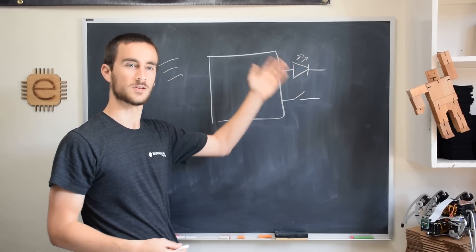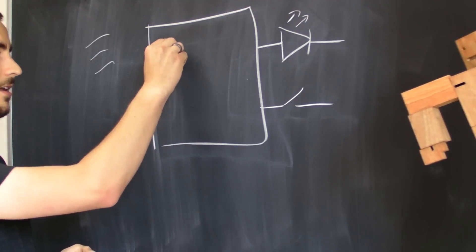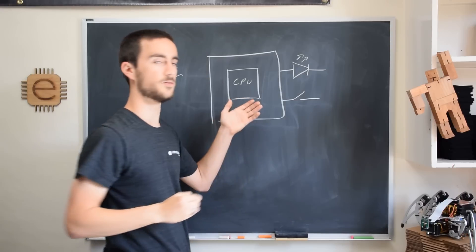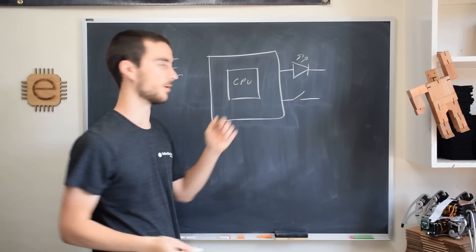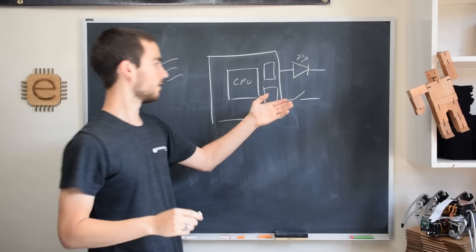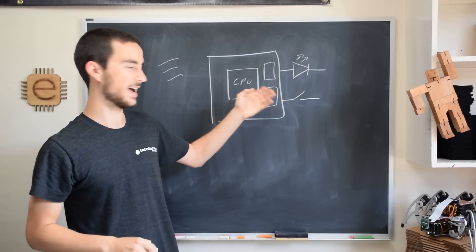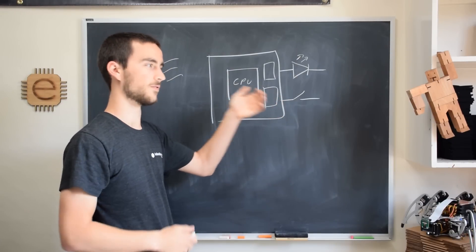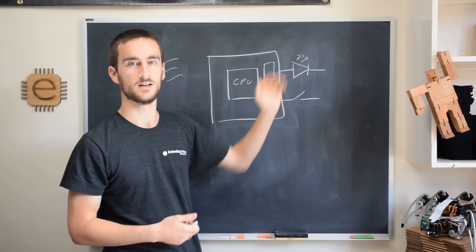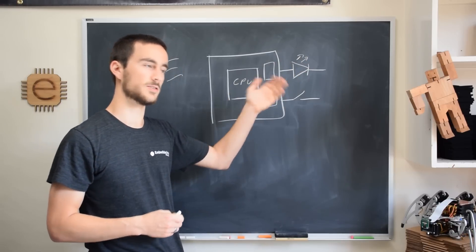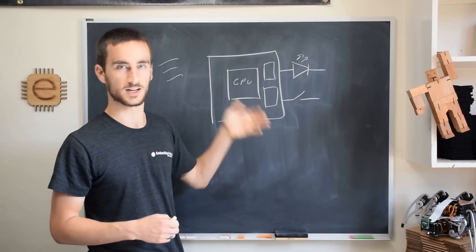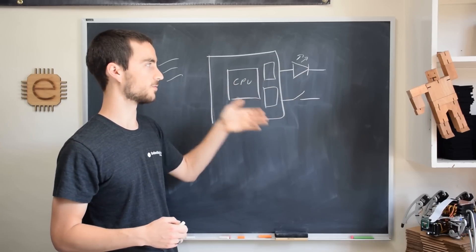Now what actually happens when you write this code and put it on the processor is that there's a CPU inside, which is the processor core, as well as some peripherals. What happens is the CPU is going to ask this peripheral: is the switch pressed? If it's pressed, then it's going to tell this one to turn the LED on or off. And this is going to happen over and over again in a tight loop, where the processor is going to spend all its time checking the switch and turning on the LED.